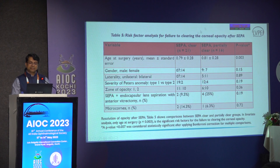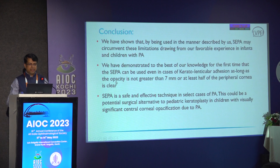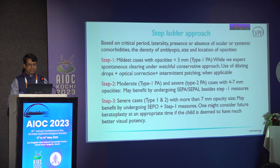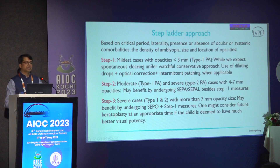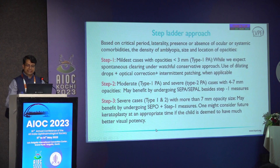The reasons for partial clearance were late presentation and larger opacity requiring additional intervention. The retrospective study had 85 percent clearance and the prospective study had 100 percent clearance. With our 10 years of data, we propose a simple algorithm: step one, mild disease managed conservatively; moderate disease where SEPA works extremely well, irrespective of type 1 or type 2; and in severe cases, iridectomy may need to be added.